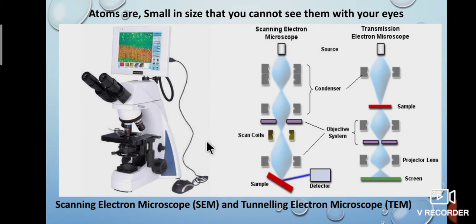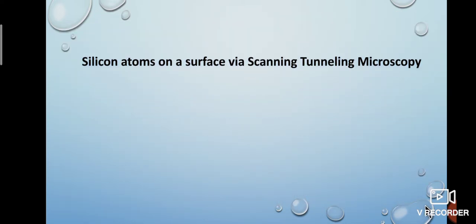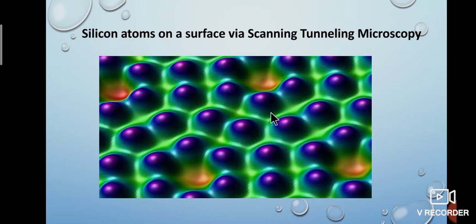We can see matter easily, but because atoms are so small in size, we cannot see them with our eyes. For that, we can use a scanning electron microscope and a tunneling electron microscope. In the picture, light from a source passes through many segments and falls on the sample. Finally, a projector lens shows the atoms on the screen. For example, a scanning electron microscope gives the result of silicon atom structure on the screen — this picture shows silicon atoms on a surface via scanning and tunneling microscopy.